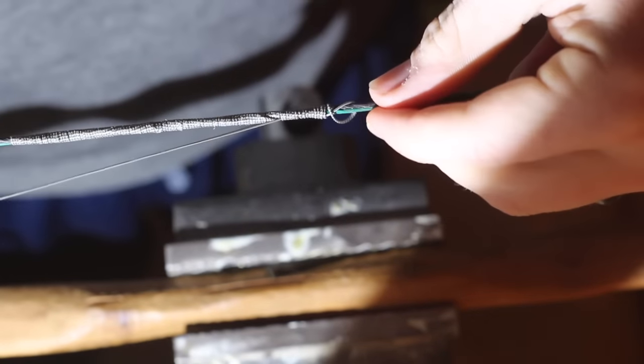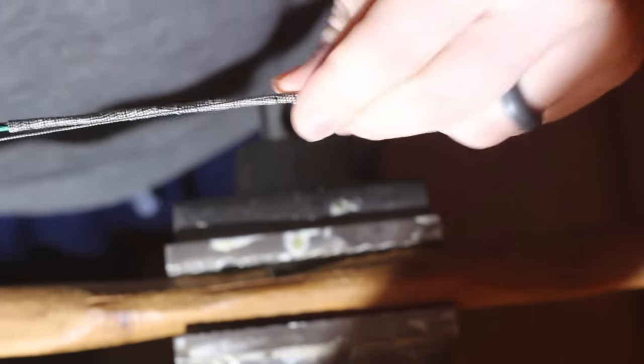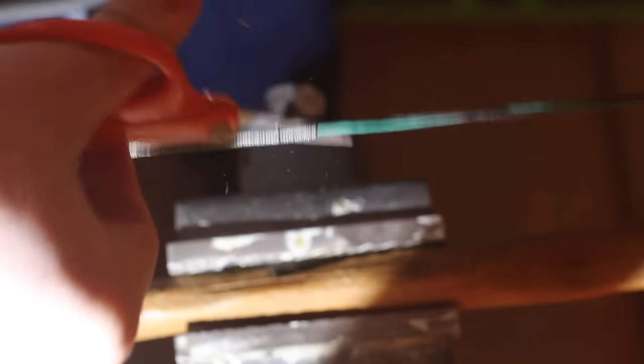And so once it's all the way wound up just pull the extra string through and then cut it off right there and you are done. I think this bowstring turned out really good and I hope yours does too. Thanks for watching!